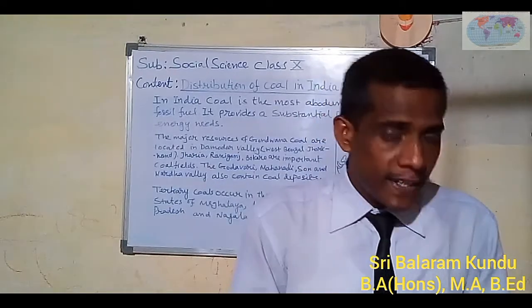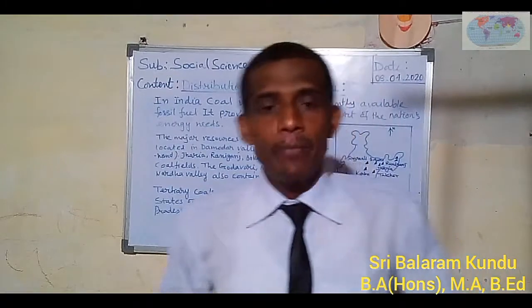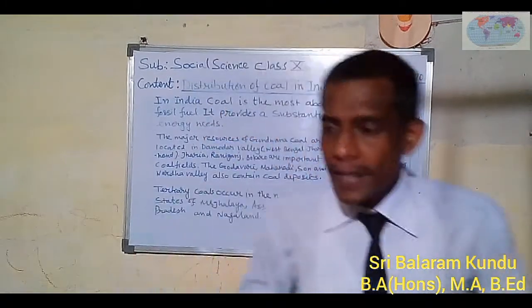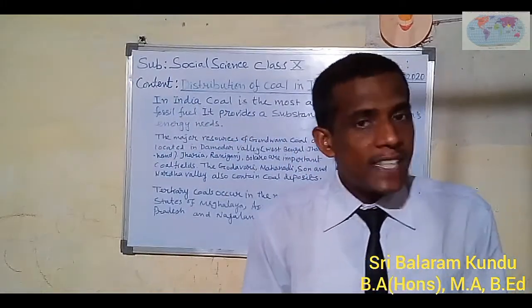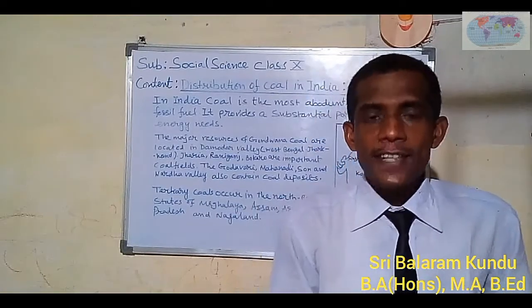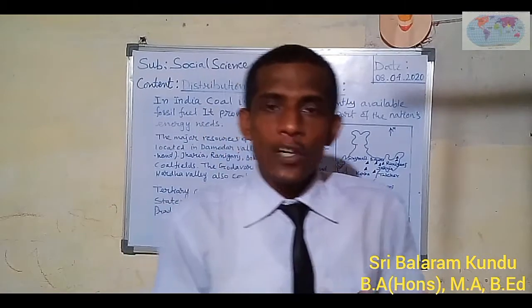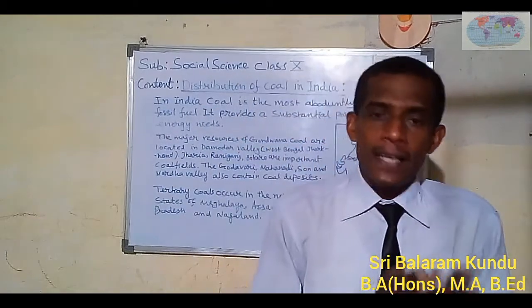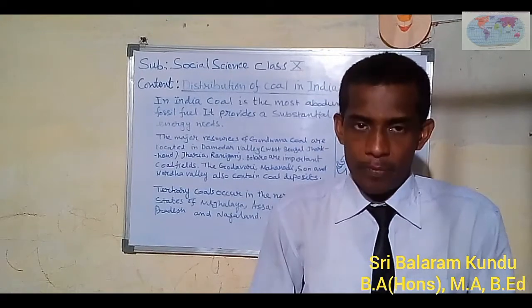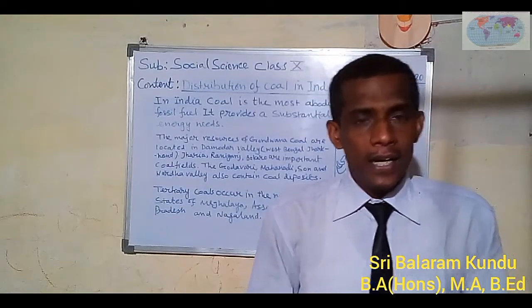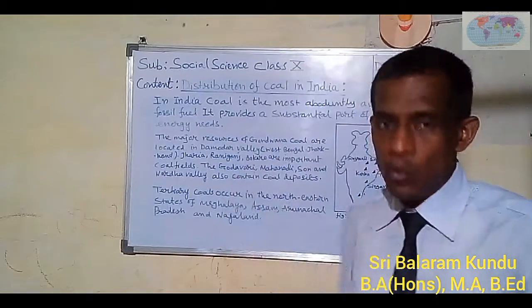Gondwana coal is also known as metallurgical coal and is the finest coal compared to Tertiary coal. The major distribution of coal in India includes West Bengal, Jharkhand, Odisha, Madhya Pradesh, Chhattisgarh, and the north-eastern part of India — Meghalaya, Assam, Arunachal Pradesh, and Mizoram — where Tertiary coal is mainly available.